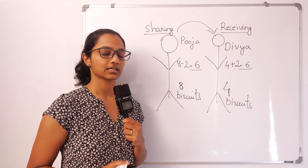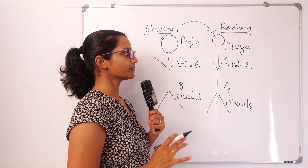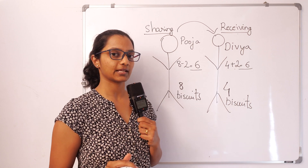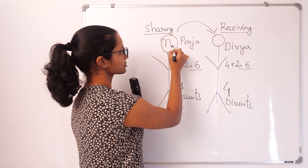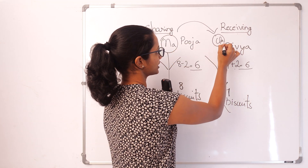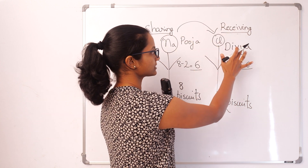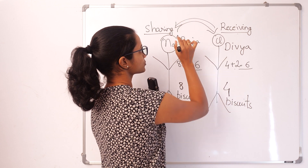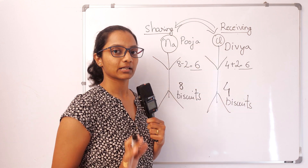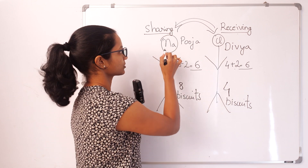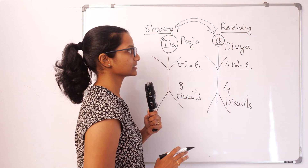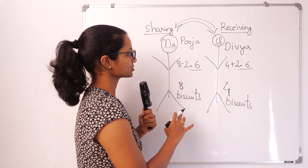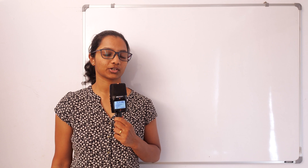Let us understand how sodium and chlorine react — the same example applies: sodium is like Puja and chlorine is like Divya, one is sharing and one is receiving. Metals and non-metals have names; let us understand this with a chemical representation. For this you will need a basic understanding of electronic configuration, which you have already studied in previous classes.